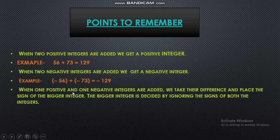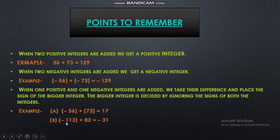When we add 1 positive and 1 negative integer, first find the difference from the bigger to the smaller number, and the answer will take the sign of the bigger number. For example, minus 56 plus 73: the difference is 73 minus 56, which is 17. Since 73 is bigger and positive, the answer is positive 17. For minus 113 plus 82: the difference is 113 minus 82, which is 31. Since 113 is bigger and negative, the answer is minus 31.